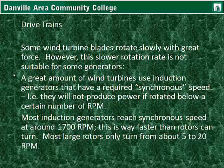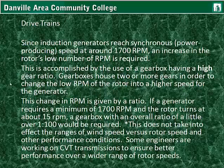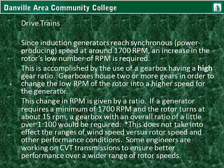A great number of wind turbines use induction generators that have a required synchronous speed — in other words, they will not produce power if rotated below a certain number of RPM. Most induction generators reach synchronous speed around 1700 RPM, which is far faster than rotors can turn. Most large rotors only turn from about 5 to 20 RPM. Since the induction generator reaches synchronous speed at around 1700 RPM, an increase in the rotor's low RPM is required, accomplished by the use of a gearbox having a high gear ratio. Gearboxes house two or more gears in order to change the low RPM of the rotor into a higher speed for the generator.